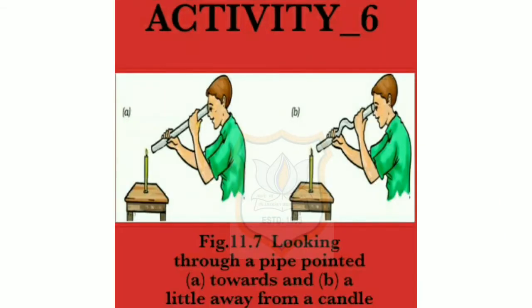Activity 6 is about showing that light travels in a straight line. Things needed: a candle, badge box, and a rubber tube. Method: Put a lit candle on a table. Take a rubber tube, stretch it straight, and look through it at the flame of the candle with one eye, keeping the other eye closed. If the rubber tube is straight, you will see the candle flame through it.